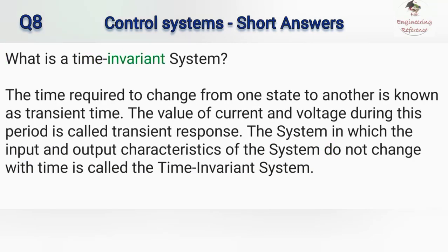What is a time invariant system? The time required to change from one state to another is known as transient time. The value of current and voltage during this period is called transient response. The system in which the input and output characteristics do not change with time is called the time invariant system.